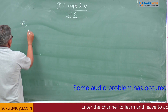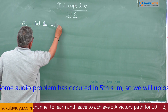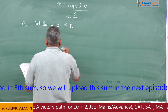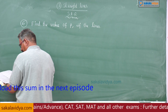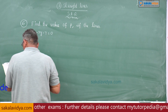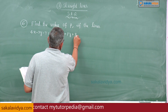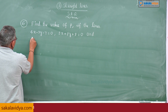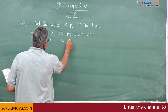Find the value of P if the lines 4x minus 3y minus 7 is equal to 0, 2x plus Py plus 2 is equal to 0, and 6x plus 5y minus 1 is equal to 0 are concurrent.